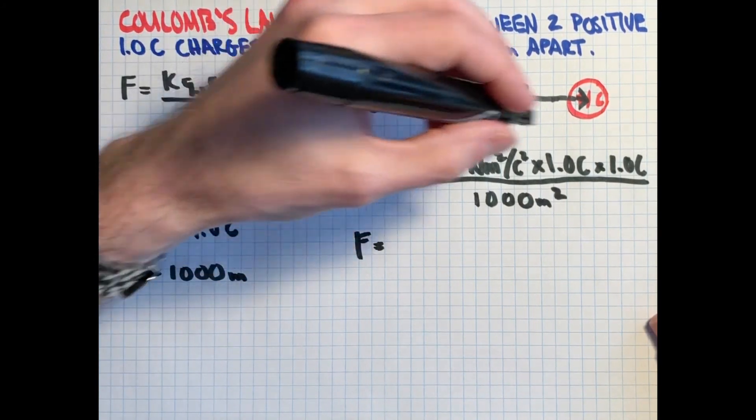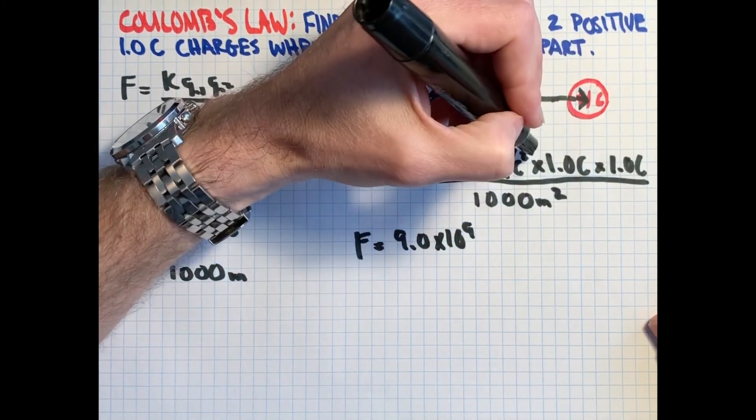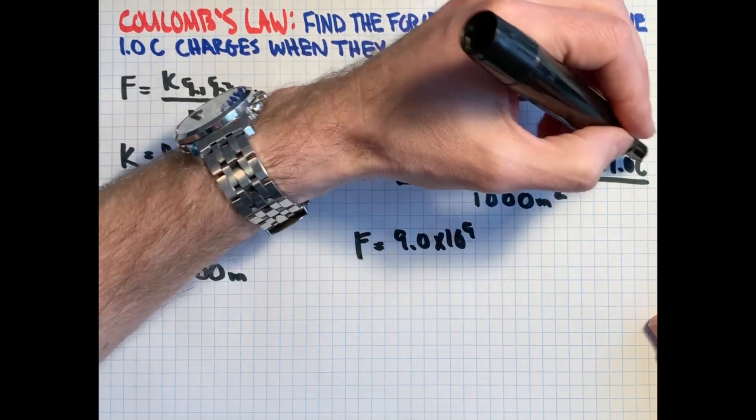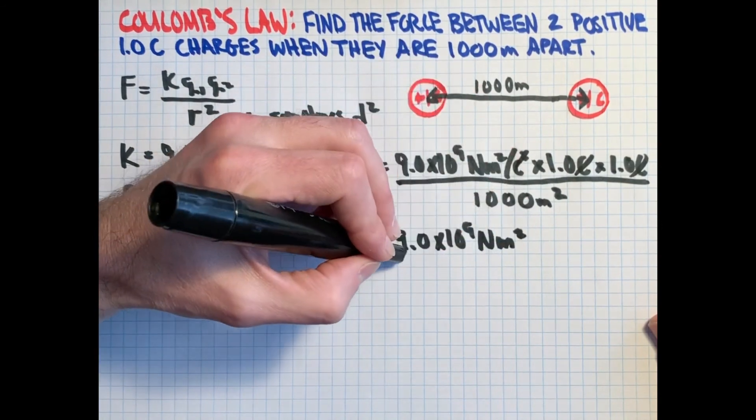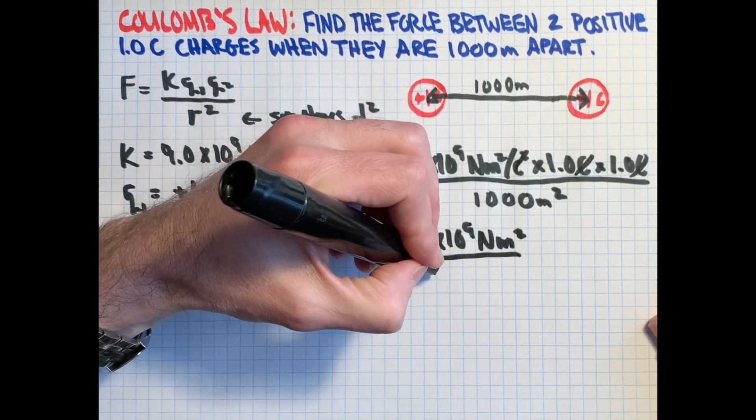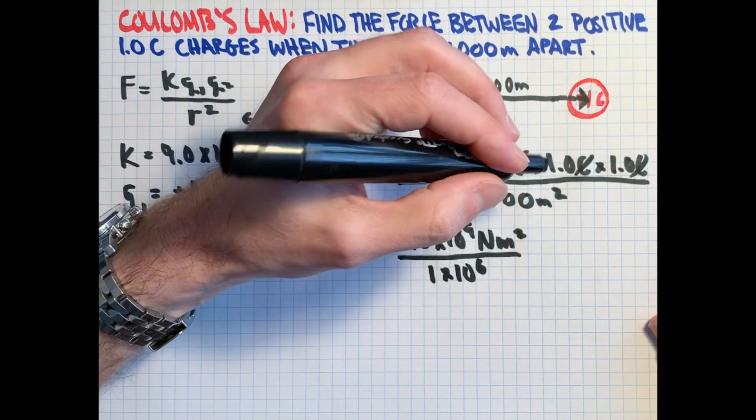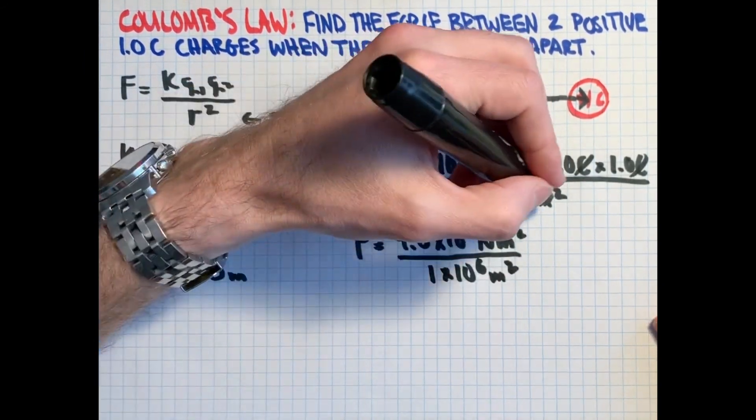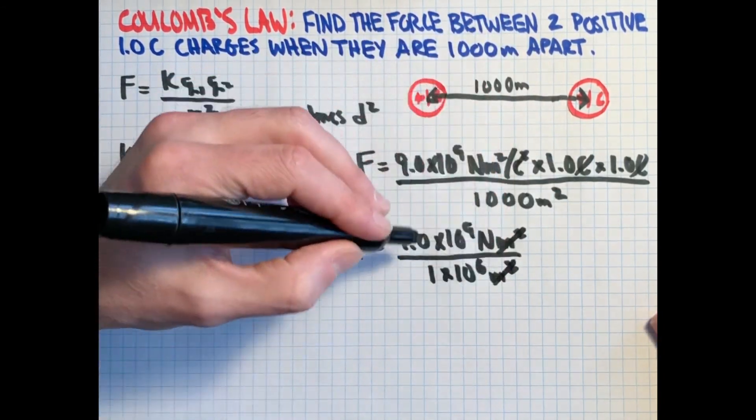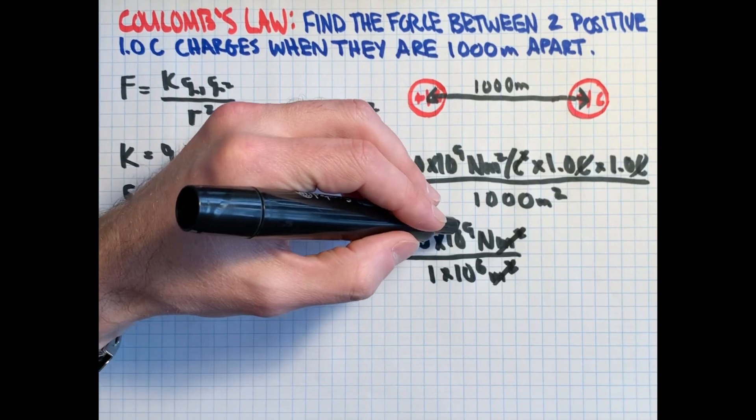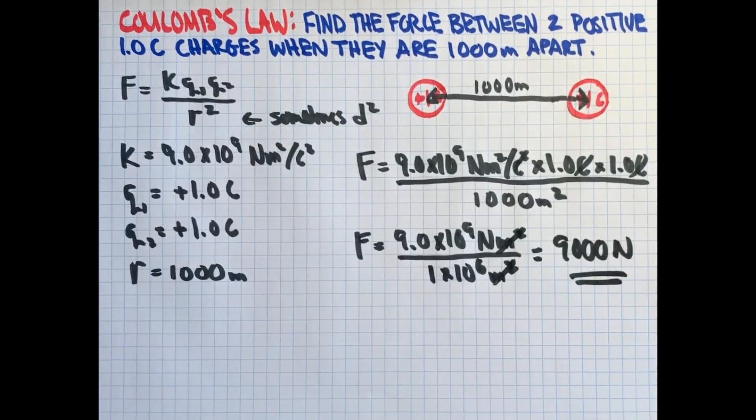So on top, we have 9 times 10 to the 9 times 1 times 1. That's just 9 times 10 to the 9. And since we have Coulombs here, there's a Coulomb squared on the bottom and a Coulomb and a Coulomb on top. Those cancel, so we're left with newton meters squared. And 1,000 squared is a million. So I'll say 1 times 10 to the 6. Meter squared, meter squared, cancelled. 9 times 10 to the 9, or 9 billion, divided by a million, gives us 9,000 newtons of force.